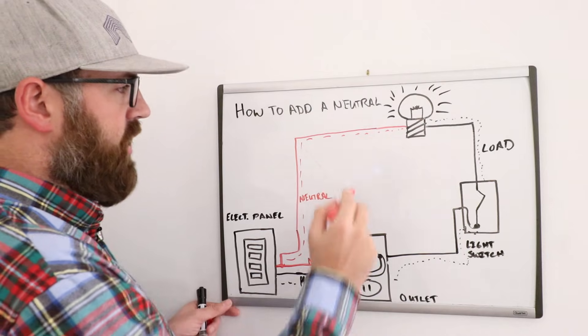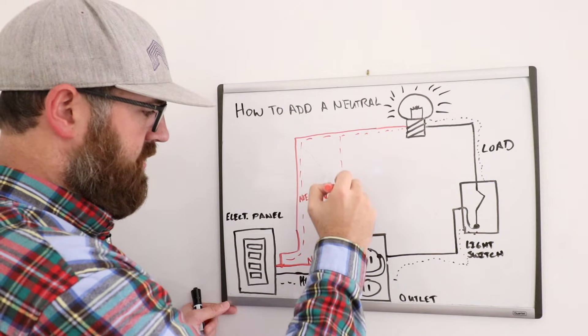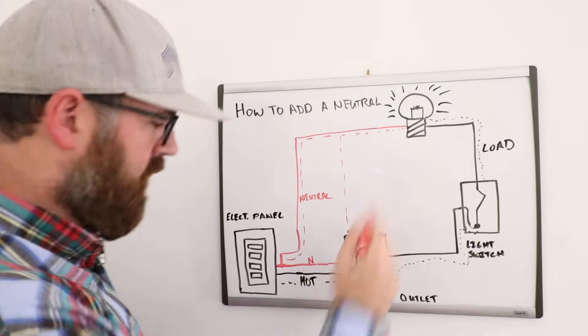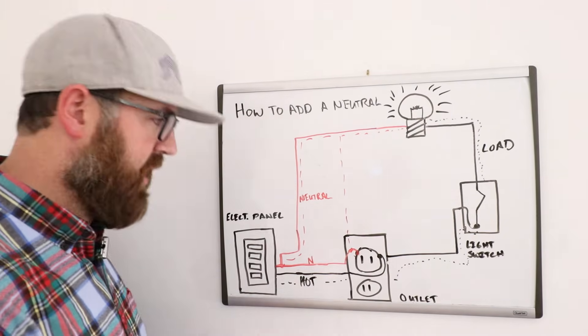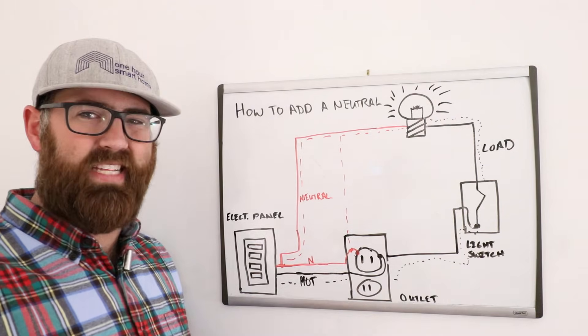Now this neutral wire could be wired just like this instead, down to the outlet, or it could go back to the electrical panel. It doesn't matter as long as it's part of the same circuit. We don't know how it's wired because we can't see in walls.